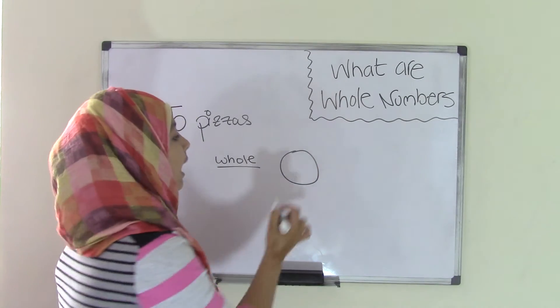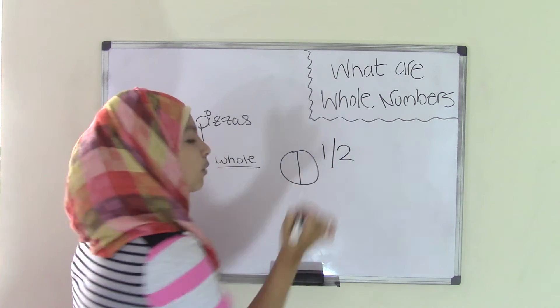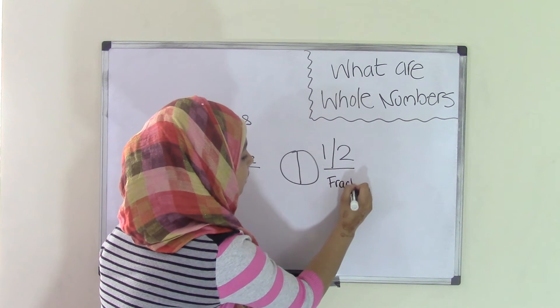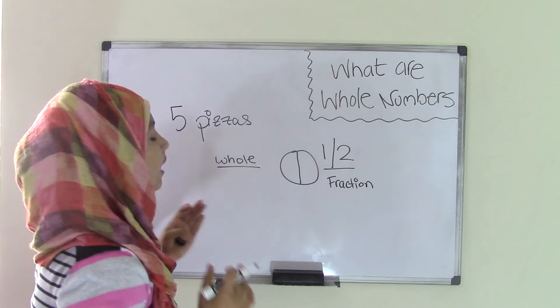However, what if you had half of a pizza? Half of a pizza would not be a whole number. This would now become a fraction. So that's why whole numbers are really important that you have it entirely whole.